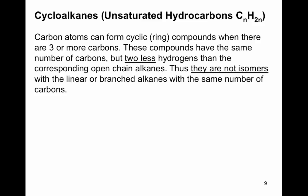Cycloalkanes are unsaturated hydrocarbons with the formula CₙH₂ₙ. Remember the formula for saturated alkanes is CₙH₂ₙ₊₂, so cycloalkanes have two fewer hydrogens and are considered unsaturated. Carbons can form cyclic or ring compounds when there are three or more carbons. These compounds have the same number of carbons but two fewer hydrogens than the corresponding open-chain alkane, which is exactly why they are not isomers with the linear or branched alkane of the same carbon count.